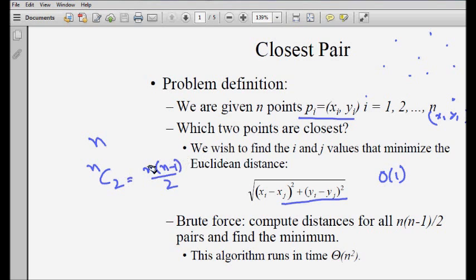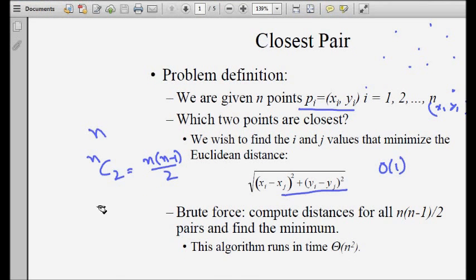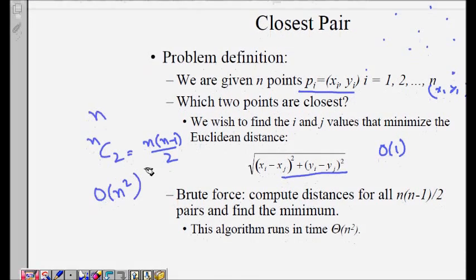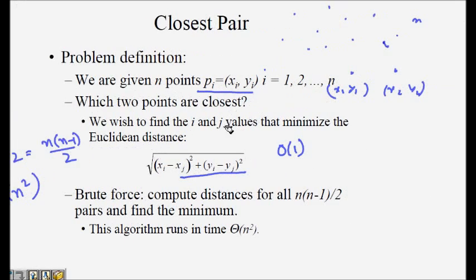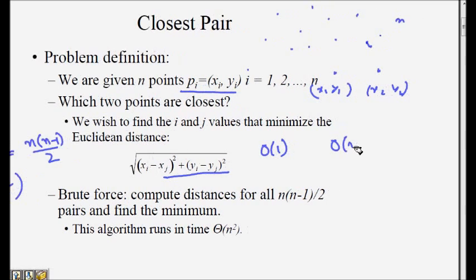You have to evaluate the distance between them and then find the minimum distance. This will take O(n²) because you run the for loop two times and find the distance among all the points. This is a brute force algorithm—we take all pairs of points, find the distance between them, and then find the minimum.